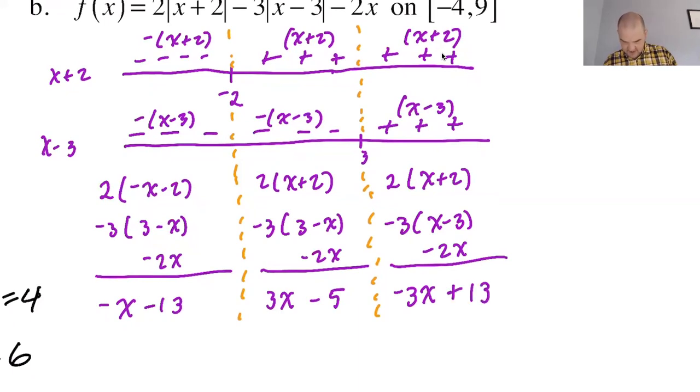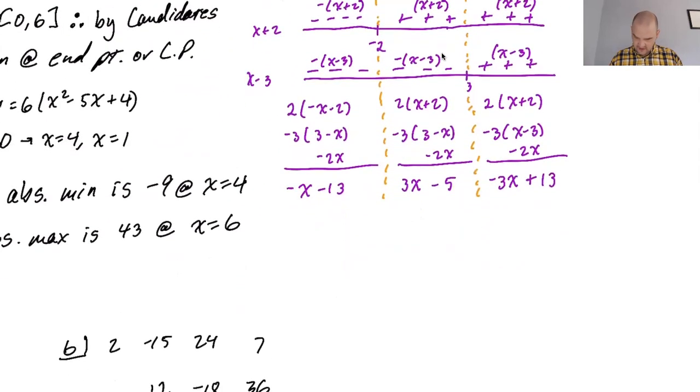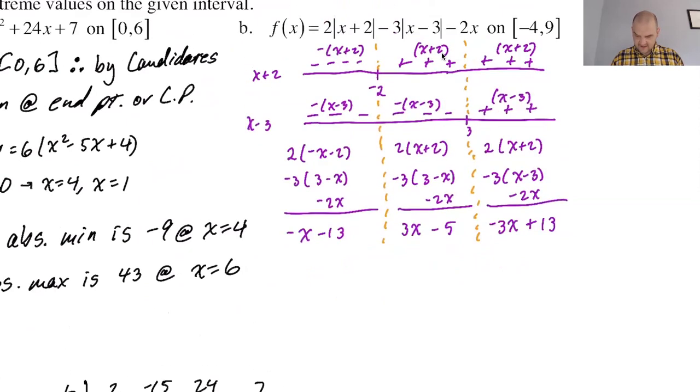Do these give me the same thing? At 3, I would get 9 minus 5 is 4. I would get negative 9 plus 13 is 4. So I think this is good, which means I can rewrite f of x. That was my whole goal here.